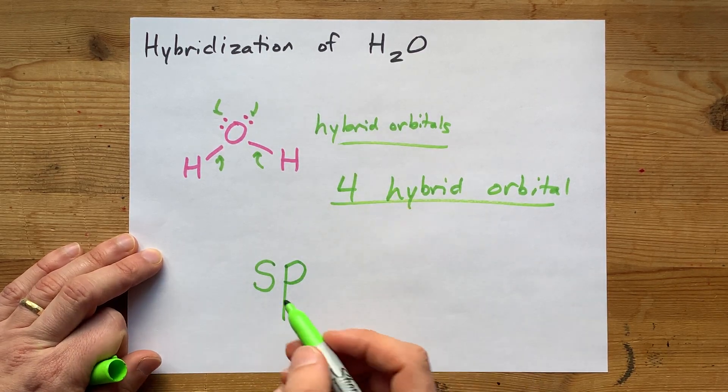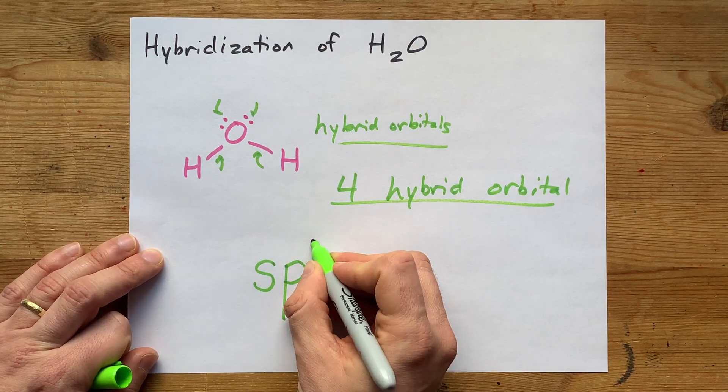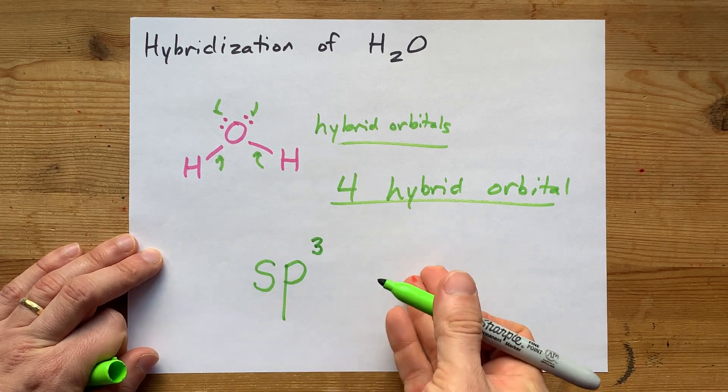but we need four total. So that's one from the S's and then three from the P's. See how I figured that out?